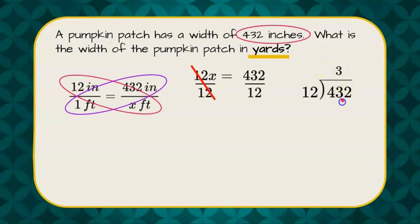12 goes into 43 three times with 7 left over. Bring down the 2 and 12 goes into 72 six times evenly. So we now know that we have 36 feet. 432 inches is 36 feet.